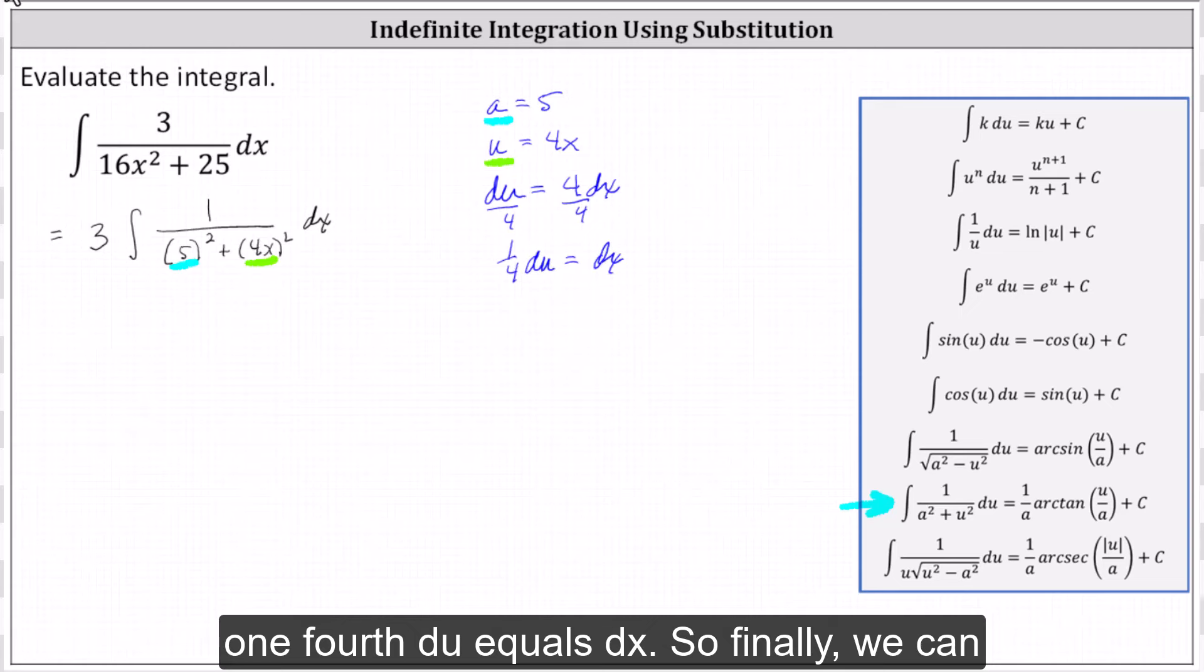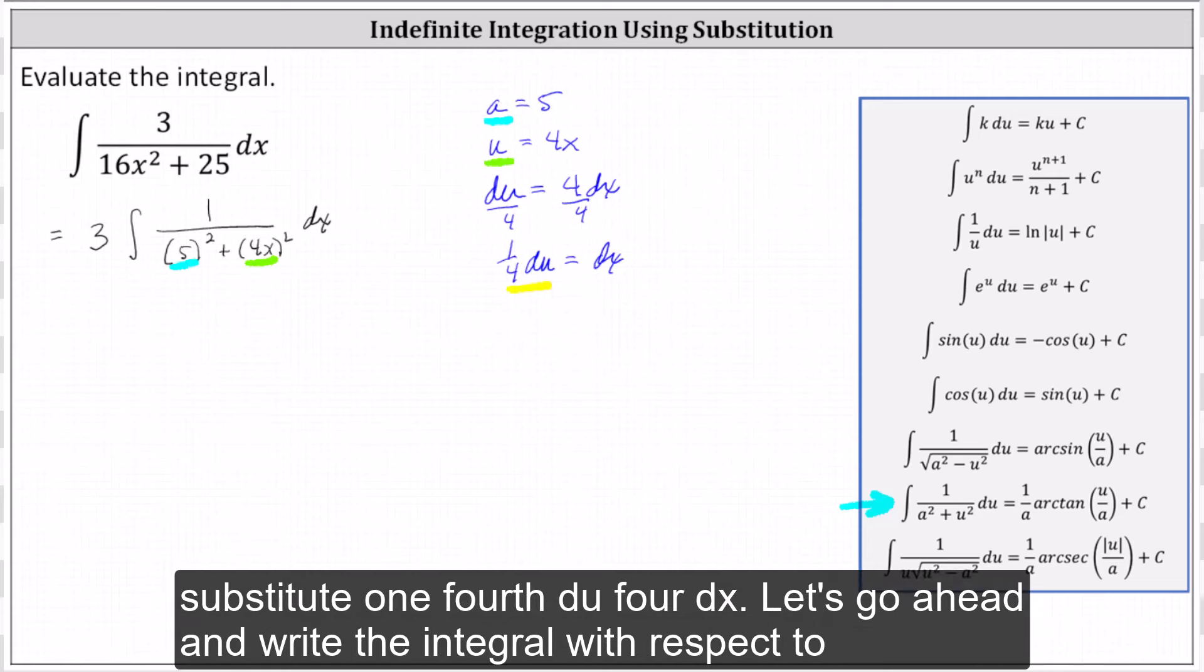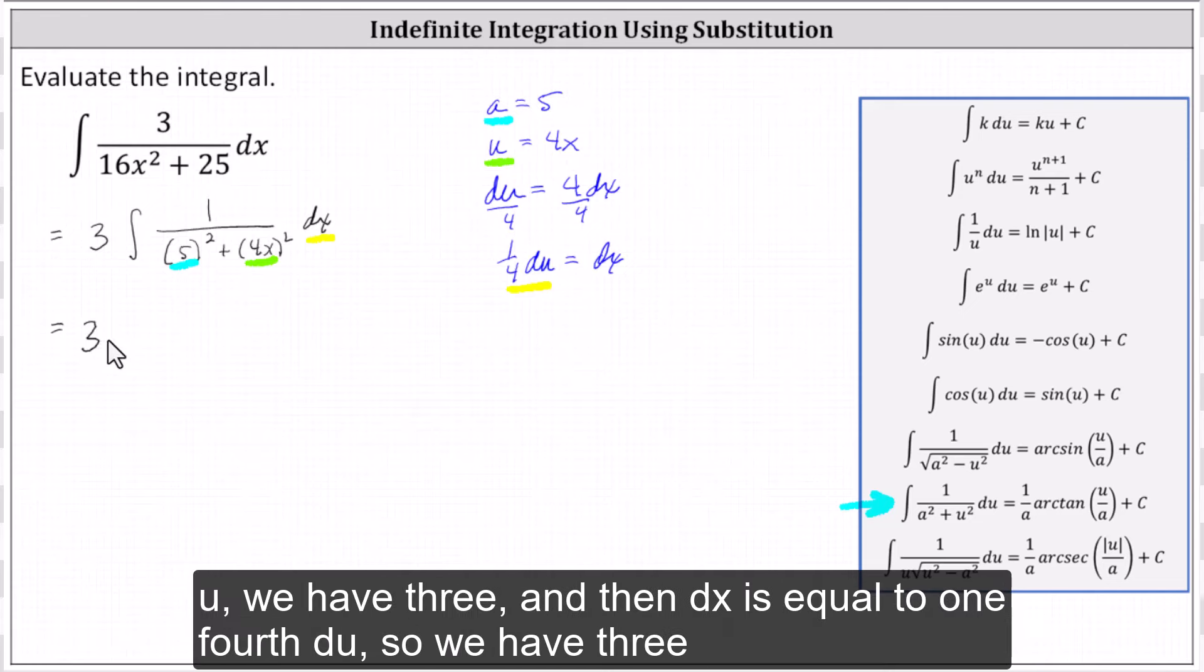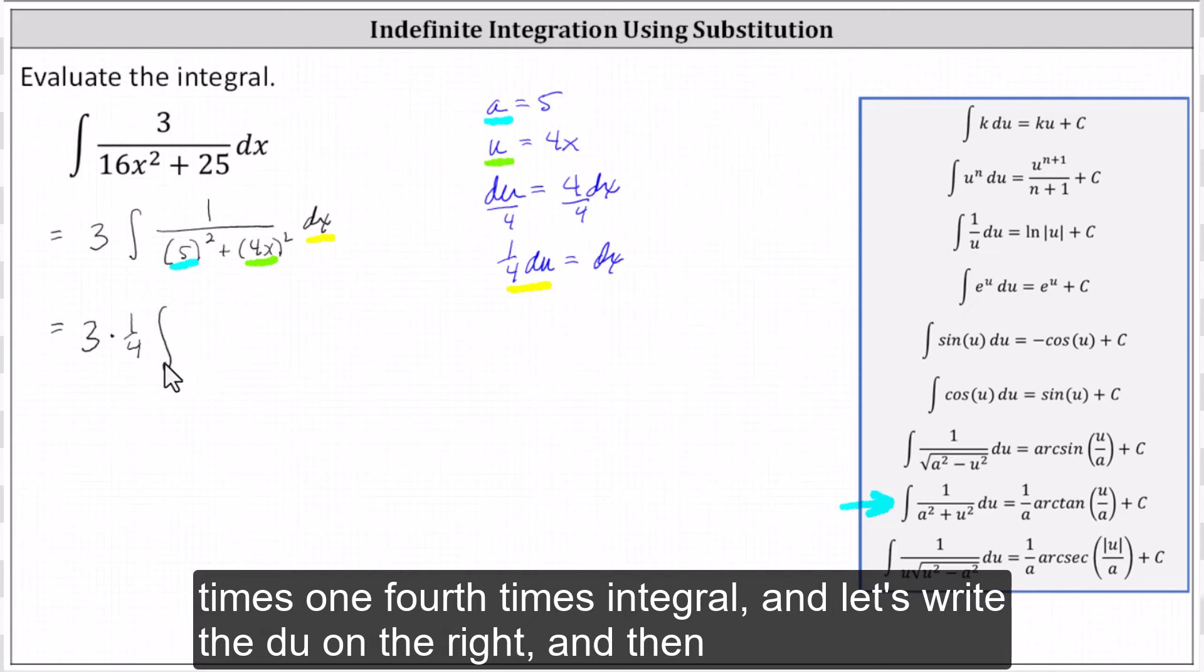So finally, we can substitute one-fourth du for dx. Let's go ahead and write the integral with respect to u. We have three, and then dx is equal to one-fourth du. So we have three times one-fourth times the integral. And let's write the du on the right.